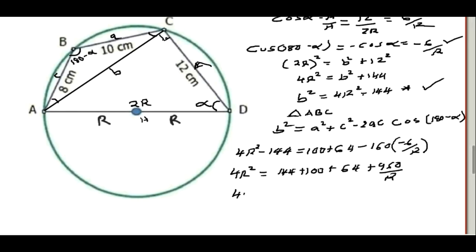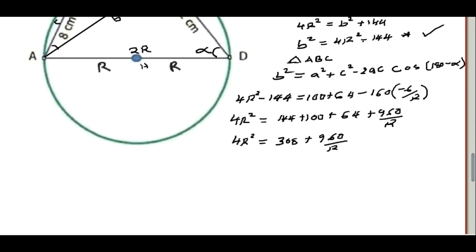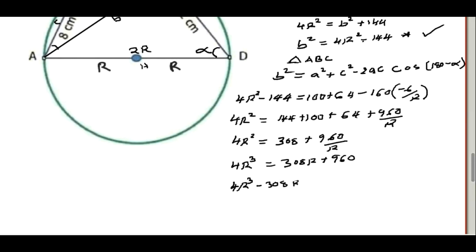Simplifying: 4R² = 144 + 100 + 64 + 960/R, since negative times negative gives positive 160 × 6 = 960 over R. So 4R² = 308 + 960/R. Multiplying both sides by R: 4R³ = 308R + 960. Rearranging, the cubic equation is 4R³ minus 308R minus 960 = 0.